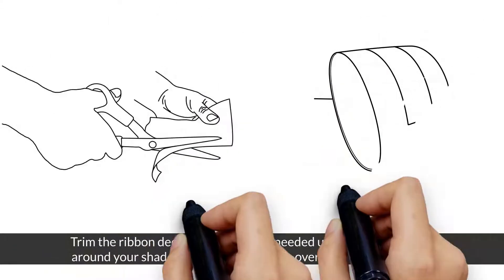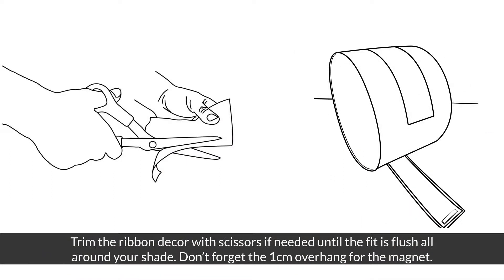Step 2. Trim. Trim the ribbon decor with scissors if needed until the fit is flush all around your shade. Don't forget the 1 cm overhang for the magnet.